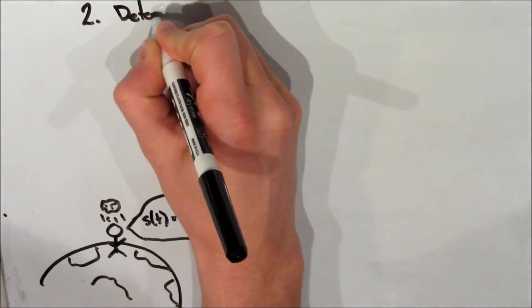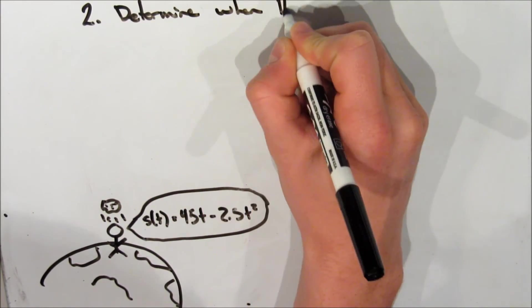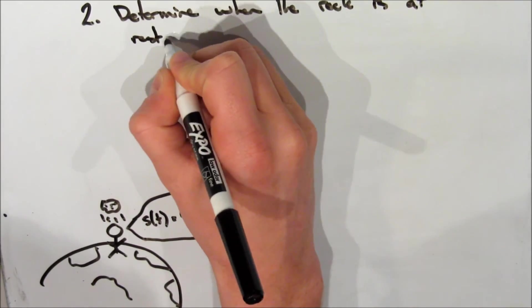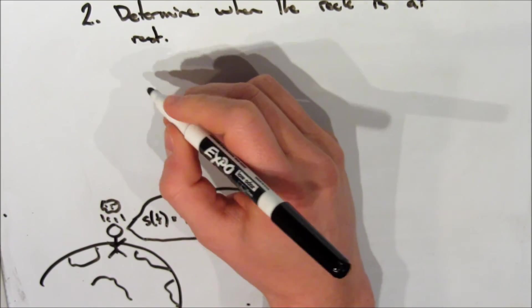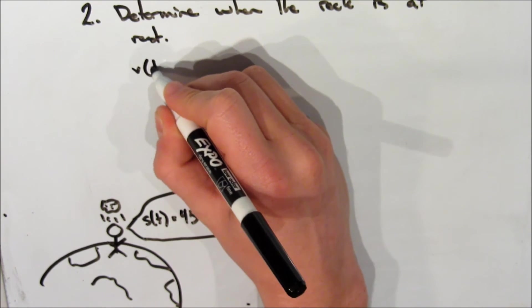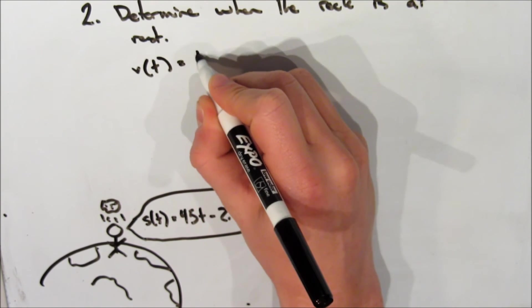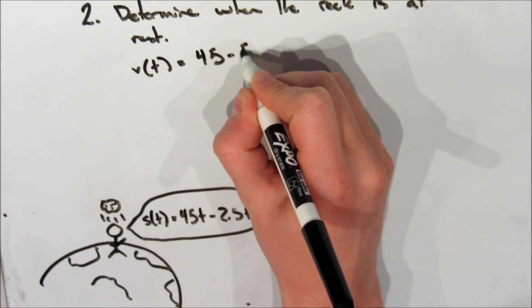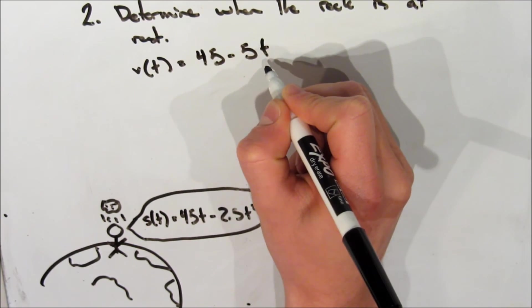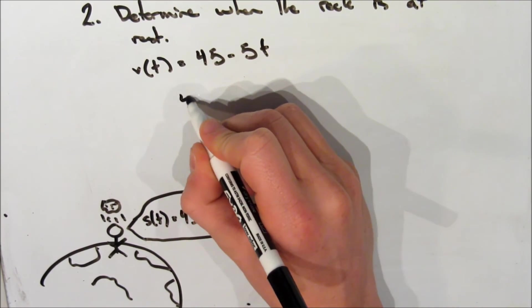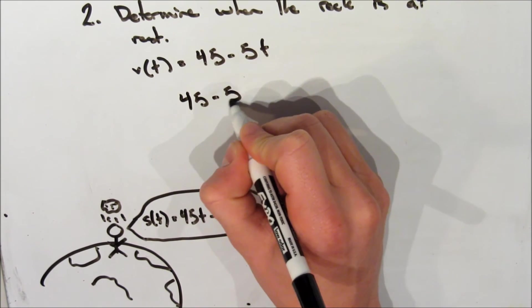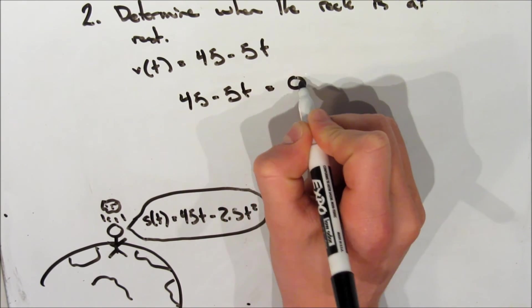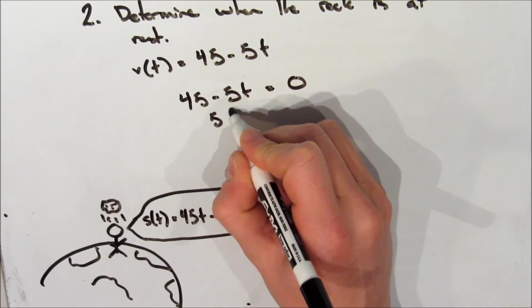So now let's take a look at another question for this scenario. We want to know after how much time is the rock at rest. So what we're going to do is take that velocity function that we figured out in the previous question, which is v of t is equal to 45 minus 5t. And to be at rest, the rock has to have a velocity of zero, so we're going to set this equation to be zero.